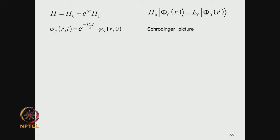We introduced quantum mechanics in various pictures. The Schrödinger picture is the one we most often use in undergraduate and introductory graduate level courses. But there are other pictures which are very useful in doing quantum theory of many particle systems, in particular the Heisenberg and the Dirac pictures.